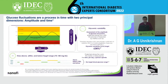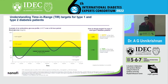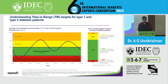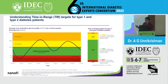Glucose fluctuations are a process in time with two important dimensions: the amplitude and the time. Understanding time in range targets is very important for both type 1 and type 2 diabetes. If 70% of blood glucose levels are between 70 to 180 mg/dL, that is an acceptable target for time in range. Time above range should be less than 25 to 5% depending on context, and very importantly, time below range should be below 4% for the majority.